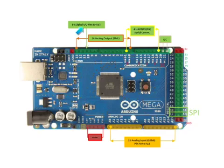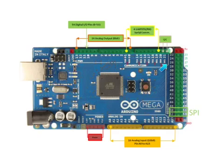Next, there are 54 digital input and output pins. They are labeled from pin 0 to pin 13, from pin 14 to pin 21, and from pin 22 all the way down to pin 53. All shaded in green are digital input and output pins.